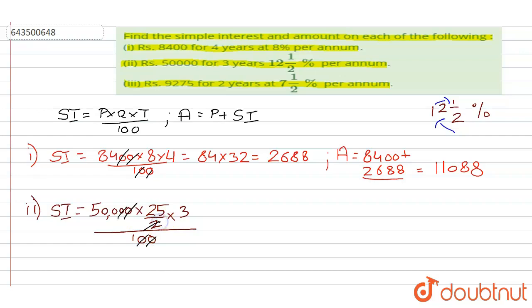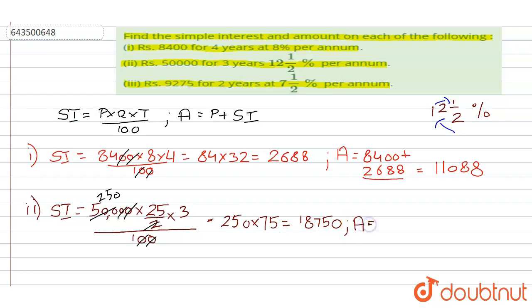After canceling, we multiply 250 by 75, which equals eighteen thousand seven hundred and fifty. The amount is principal plus simple interest: 50000 plus 18750 equals sixty-eight thousand seven hundred and fifty.